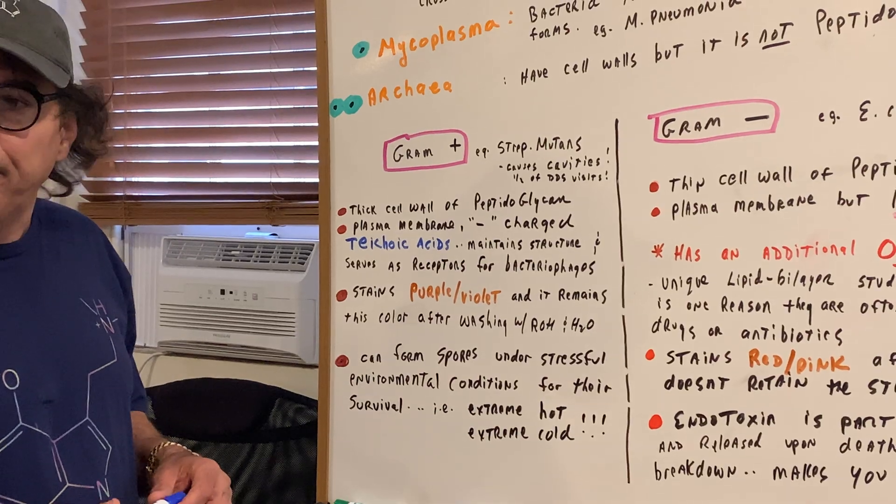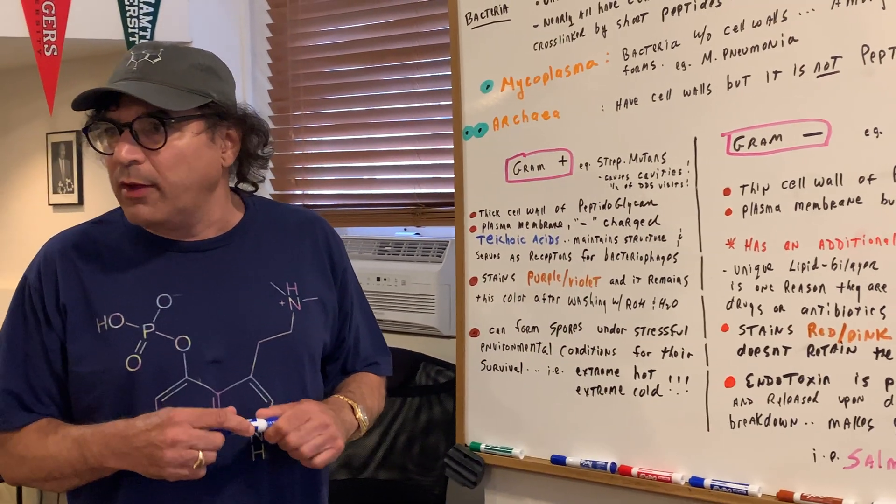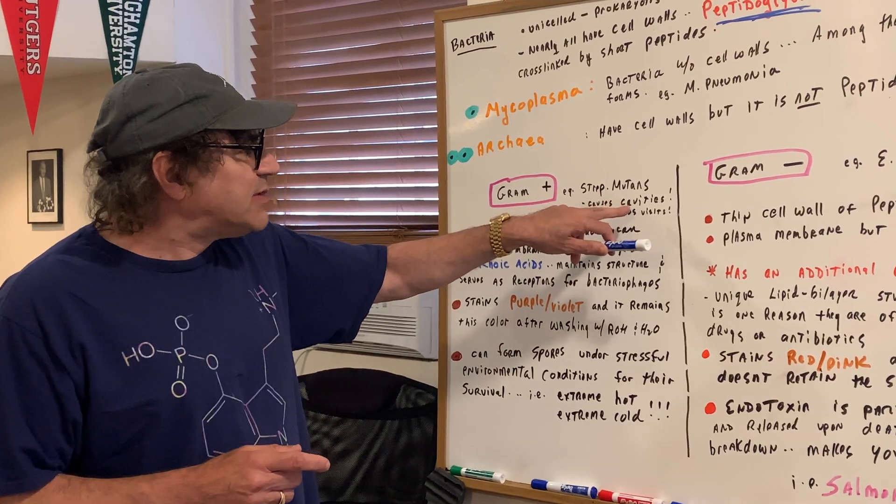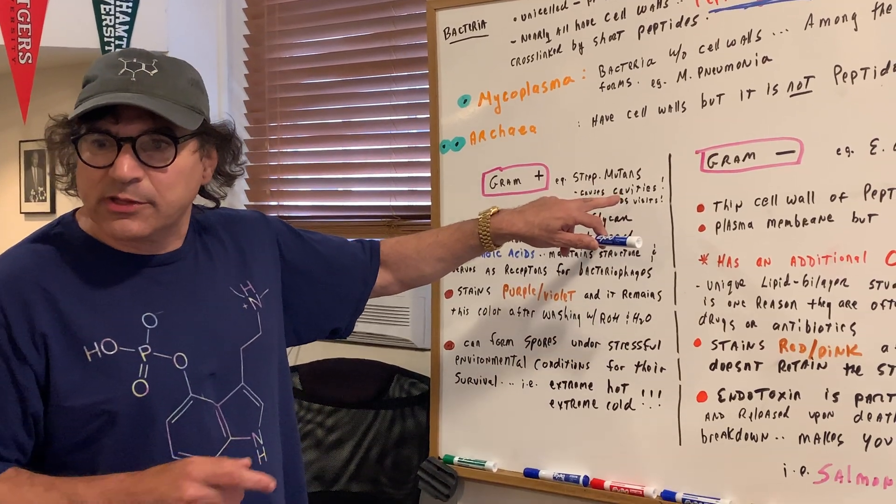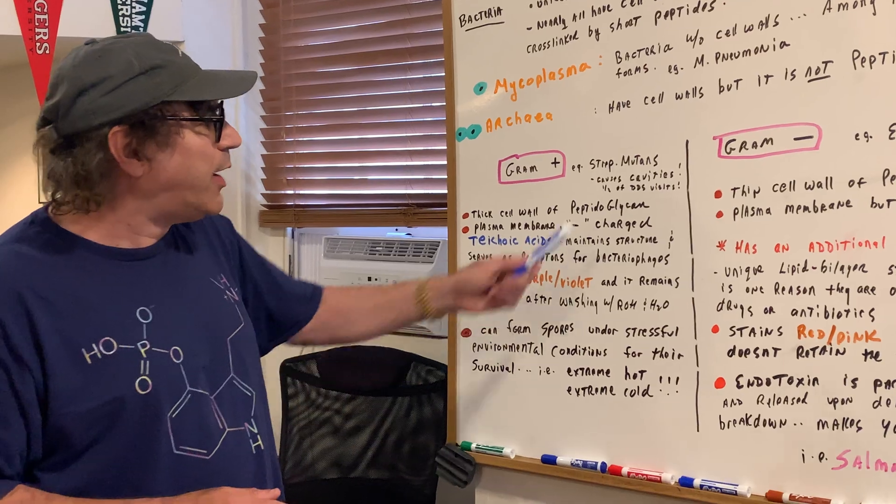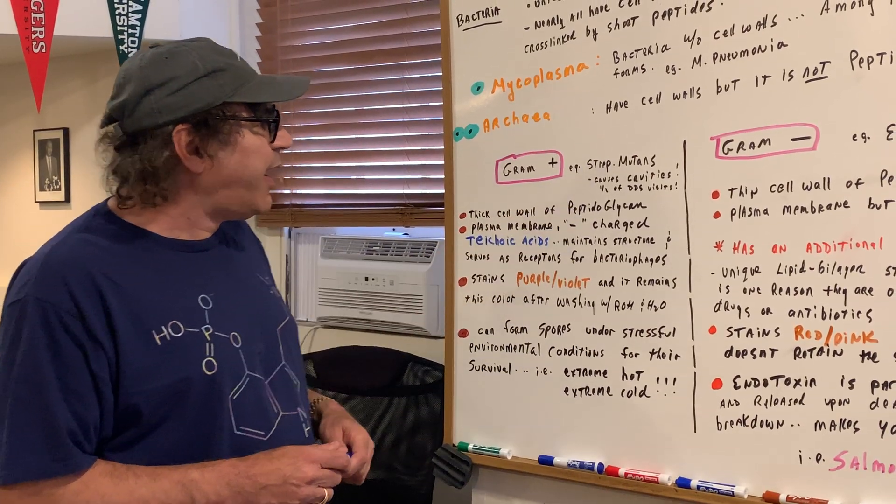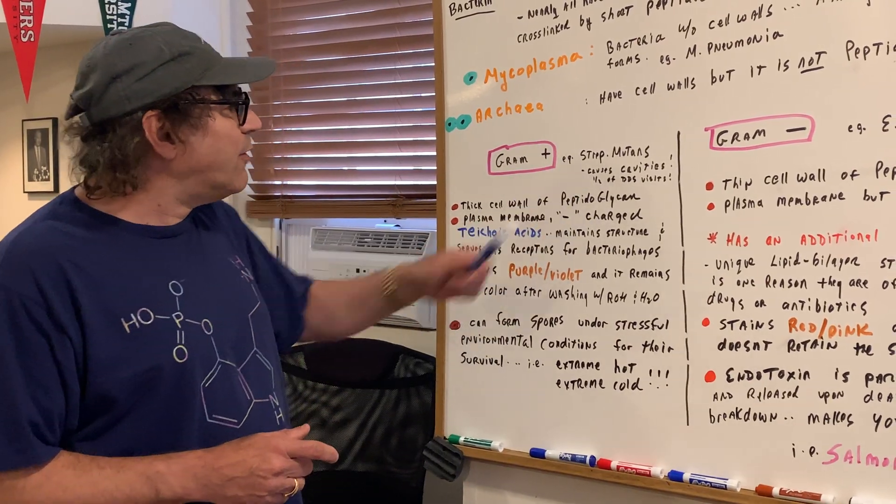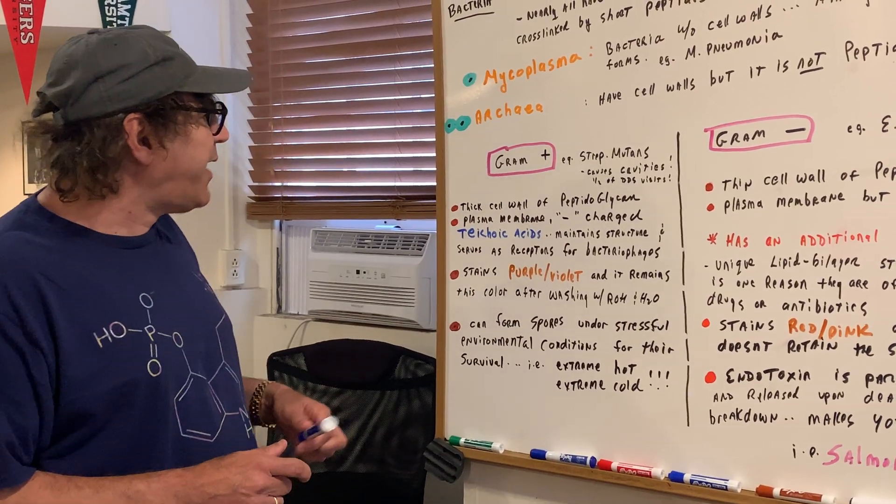Mark, do you ever hear of strep mutans? Anybody ever heard of that? Well, this is one of the bacteria that's involved in causing cavities. So while you're budding dentists out there, you're going to be seeing that in dental school. So strep mutans causes dental cavities. Half a dental business, by the way, are for treating cavities.